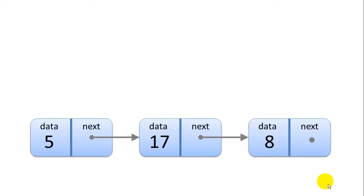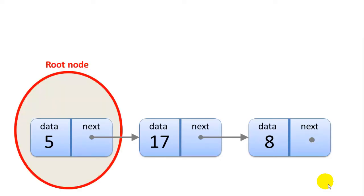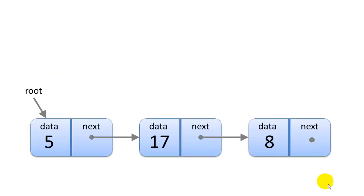Here's a simple linked list with just three nodes. You can see that each node has a data element and a pointer to the next node. The very first node is called the root node, and we'll always keep a pointer to the root node as a variable in the linked list so we can access the first node. The very last node in the list doesn't have a next pointer because there is no next node, so the next pointer will be null — or in Python it will be none.